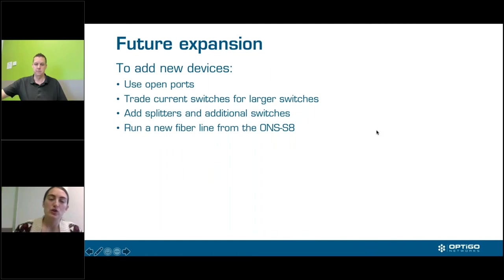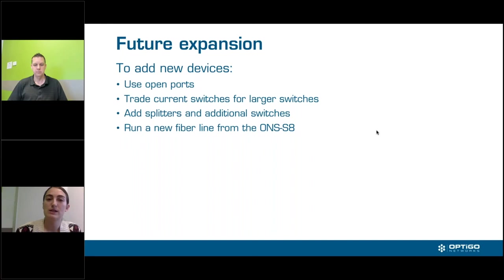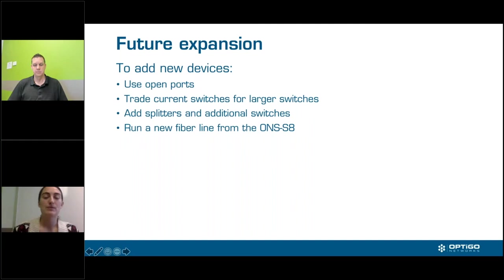Future expansion is very important to think about once you think you've got your design done. If you're going to add new devices in the future, the first and easiest option is use open ports — with eight-port switches there should be four open ports on most floors. If you've used a four-port switch you can swap it for an eight or sixteen. If you're using a rack-mounted eight-port, you can upgrade to twenty-four ports. As Ryan mentioned earlier, if you're considering eight ports, use the rack-mounted ones from day one since rack-mounted can go up to twenty-four or forty-eight, while DIN rail can only go up to sixteen.